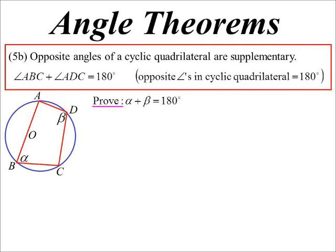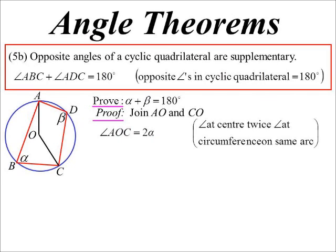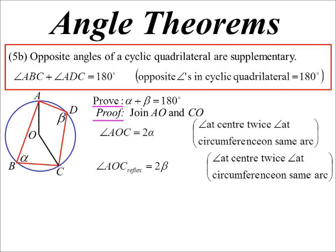Let's prove it. So if I draw in a couple of radii, AO and OC, I can now use the angle at the centre theorem twice. So I can say, look, I know angle AOC would be twice alpha, but then if I look at it going the other way using the major arc...